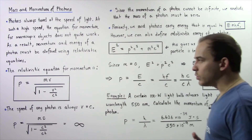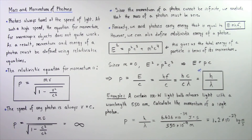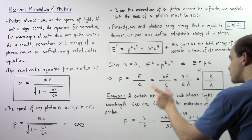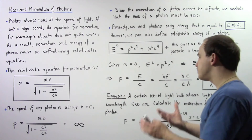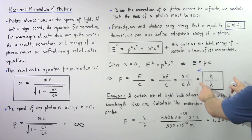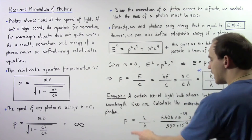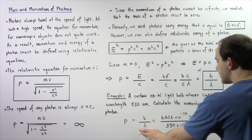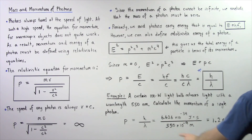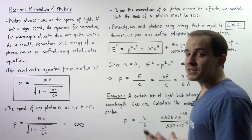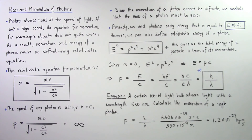Let's work through the following example using this equation. A certain 100-watt light bulb releases light with a wavelength of 550 nanometers. Calculate the momentum of a single photon produced by this light bulb. Applying p = H divided by lambda: Planck's constant is 6.626 times 10 to the negative 34 joule-seconds, and the wavelength is 550 times 10 to the negative 9 meters. This gives a momentum of approximately 1.2 times 10 to the negative 27 kilogram-meters per second.